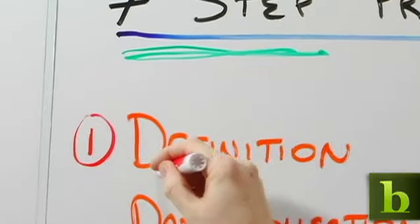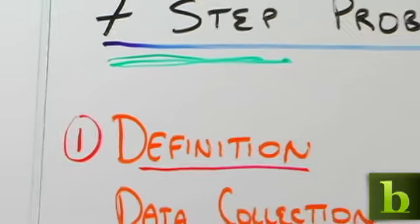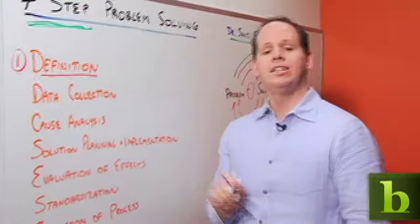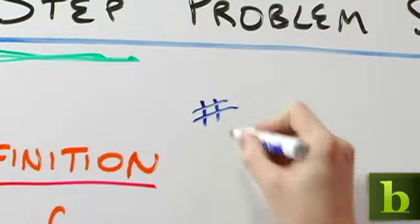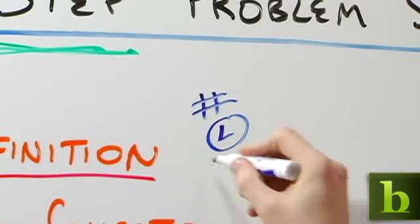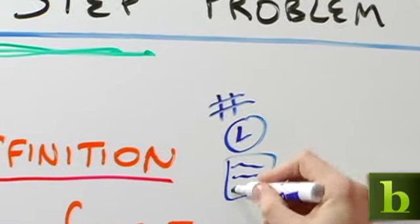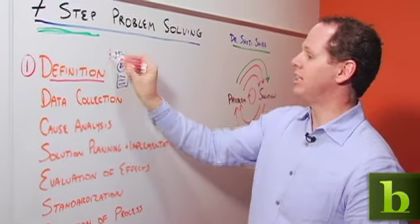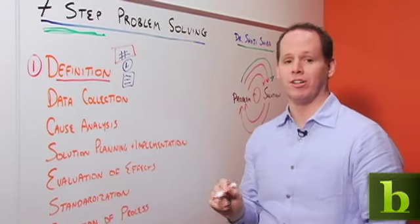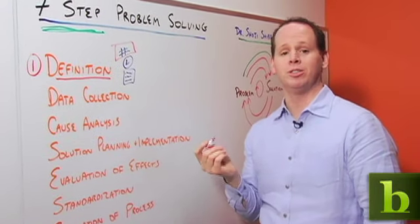The first step is definition. Definition asks the question, what is the problem really? So let's take our example of the customer service center. Is the problem the number of calls? Is the problem how long the calls are taking? Is the problem something about the content of the calls? What is the real problem? Until you know that, you can't go any further. Now let's say in this case we decide actually the problem is the number of calls. There seem to be more calls than there used to be.